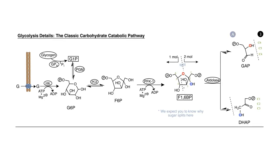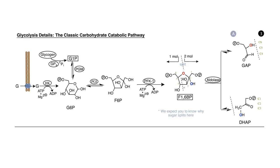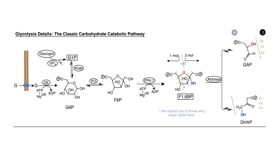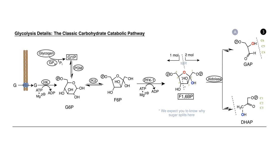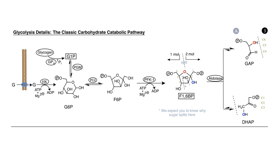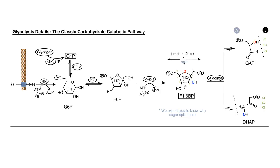This step, like hexokinase, is a site of regulation of the pathway. The word glycolysis comes from the Greek for sugar splitting, and we're now at the step where the 6-carbon compound splits into two 3-carbon compounds. The enzyme that splits the sugar in half is called aldolase. It forms a protonated Schiff base at the number 2 carbon of fructose 1,6-bisphosphate, drawing electrons from the hydroxyl group on carbon 4, resulting in cleavage into two parts: carbons 1, 2, and 3 form DHAP (dihydroxyacetone phosphate), and carbons 4, 5, and 6 form GAP (glyceraldehyde-3-phosphate).